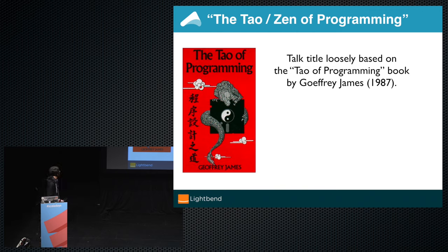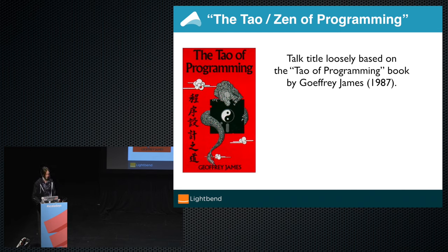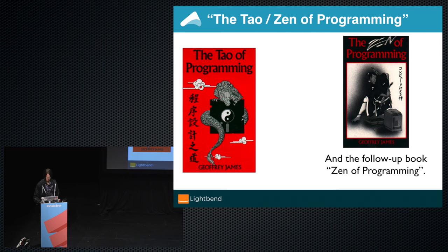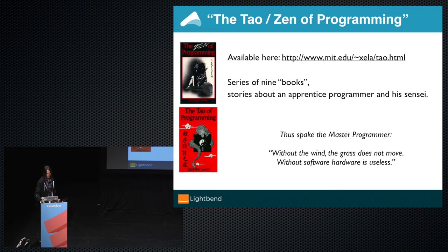So where does the title of the talk come from? Maybe some of you have seen the Tao of Programming book by Geoffrey James. It's a hilarious book that tries to explain programming in the way of Tao — like a Tao master explaining his philosophy of programming. There are other 'Tao of programming' ones, and I thought that's a nice way to inspire people.